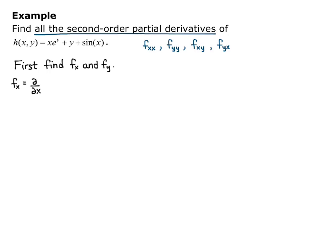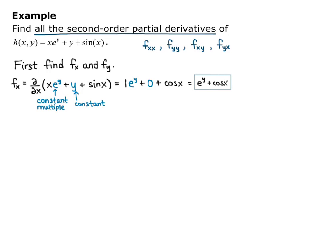f sub x is the partial derivative with respect to x of our function. Our function is x times e to the y, plus y, plus sine x. Since we're differentiating with respect to x, e to the y is a constant multiple and y by itself is just a constant — its derivative will be 0. Taking the derivative: the derivative of x is 1, multiplied by the constant e to the y, plus 0, plus cosine of x. So f sub x equals e to the y plus cosine x.